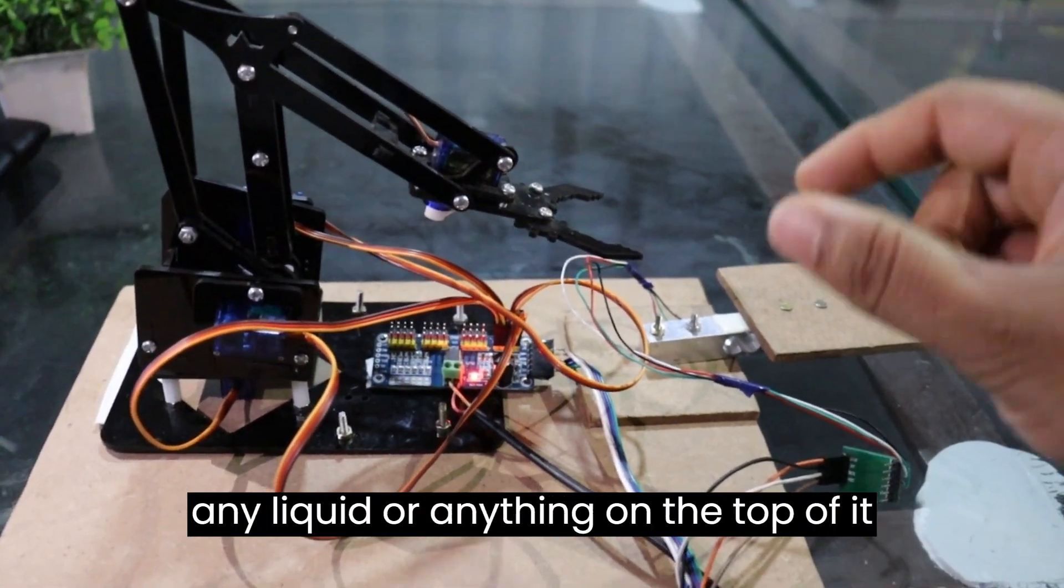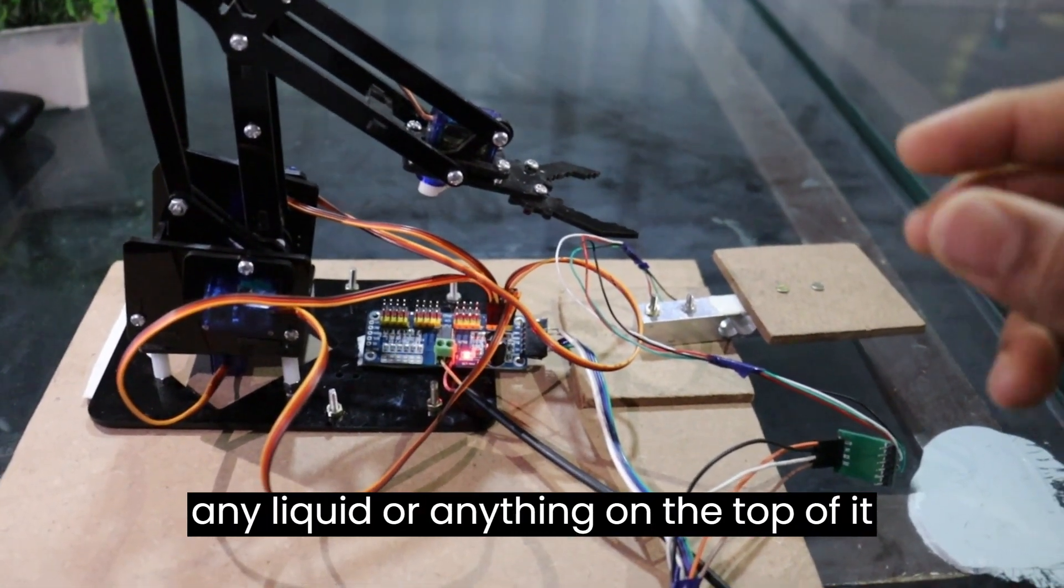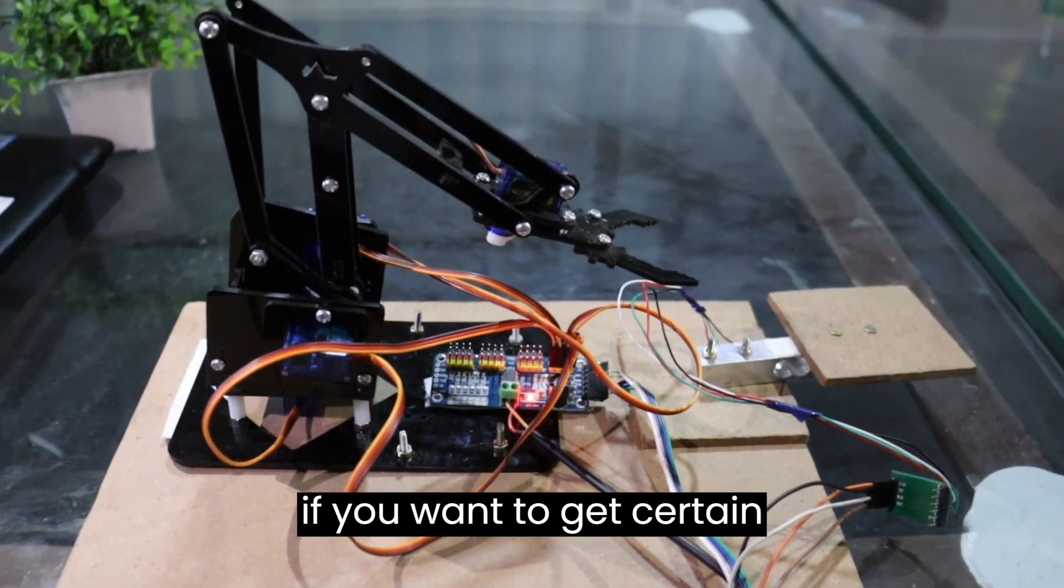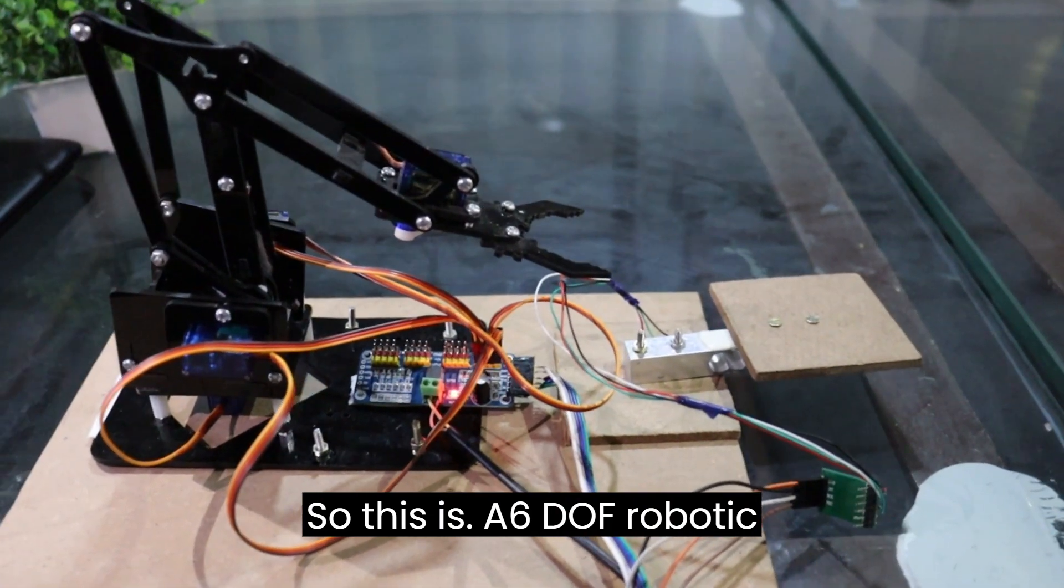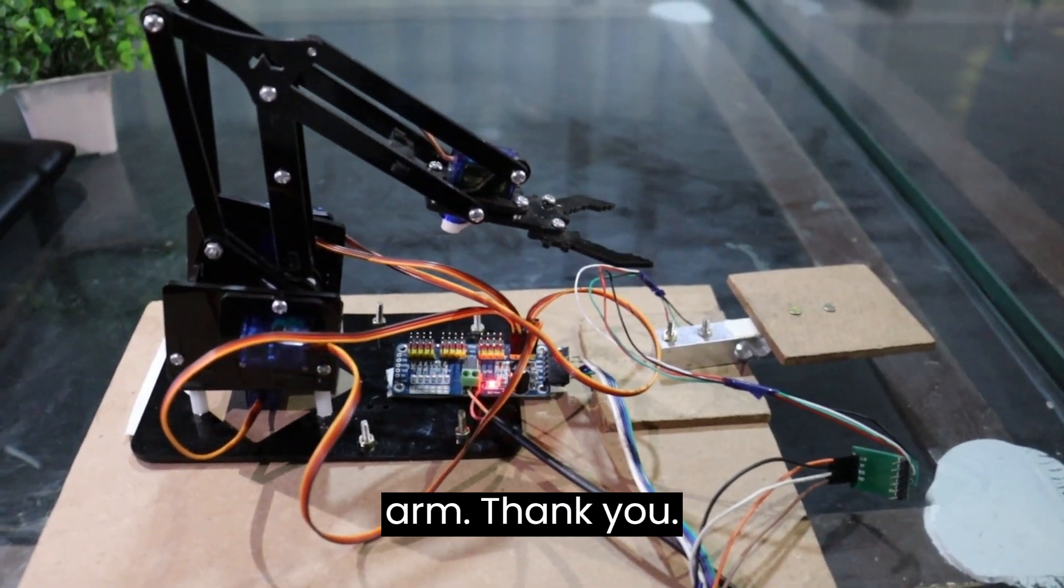Once you place an object on top of it, you can place any liquid or anything if you want to get certain actions with that particular weight. So this is a 6DOF robotic arm, thank you.